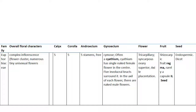Euphorbiaceae — this is the castor family. Complex inflorescence with a flower cluster of numerous tiny unisexual flowers. Calyx five, corolla five, five stamens — which are three. Gynoecium is cymose, often a cyathium, which has a single naked female flower in the center, with five involucral bracts surrounding it. In the axil of each bract there are naked male flowers.